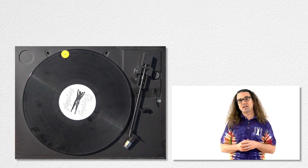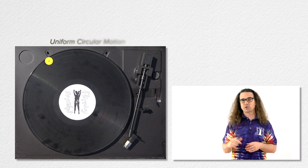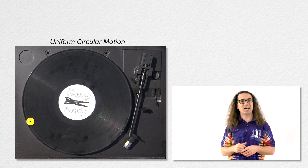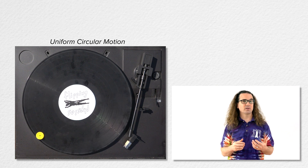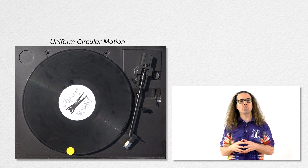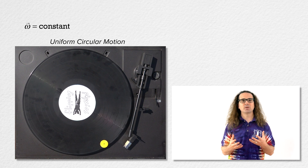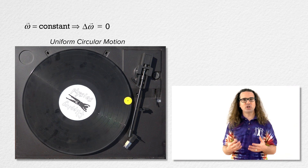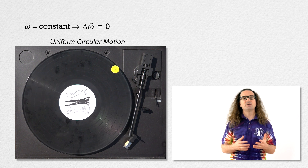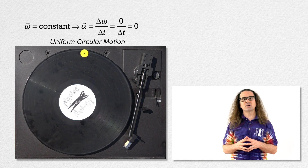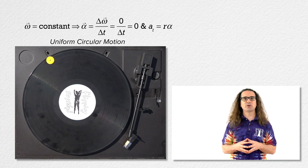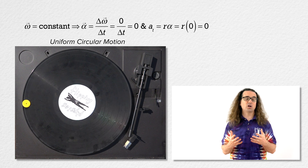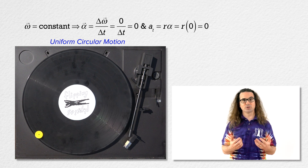Good morning. We have already discussed uniform circular motion, for example, the motion of the small yellow chip on top of the record. The chip is an object moving with a constant angular velocity. Because its angular velocity is constant, its change in angular velocity is zero, the angular acceleration of the chip is zero, the tangential acceleration of the chip is also zero, and its motion is called uniform circular motion.